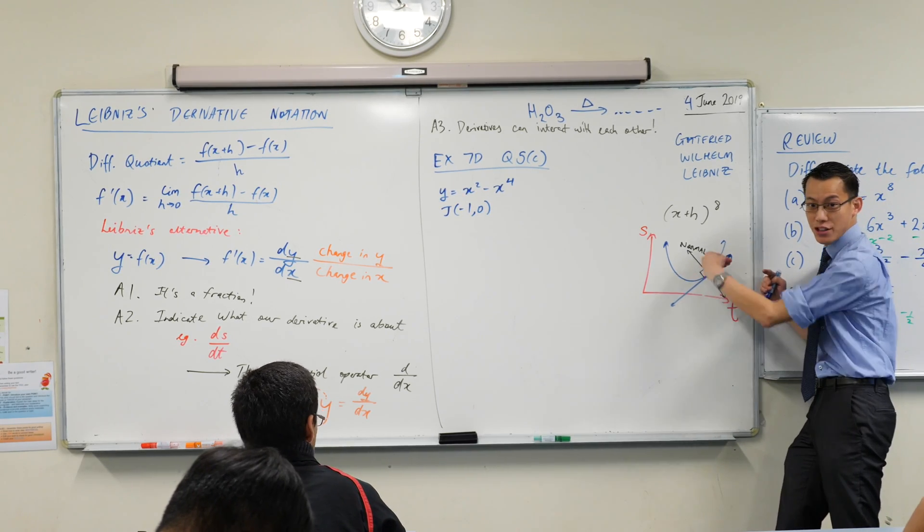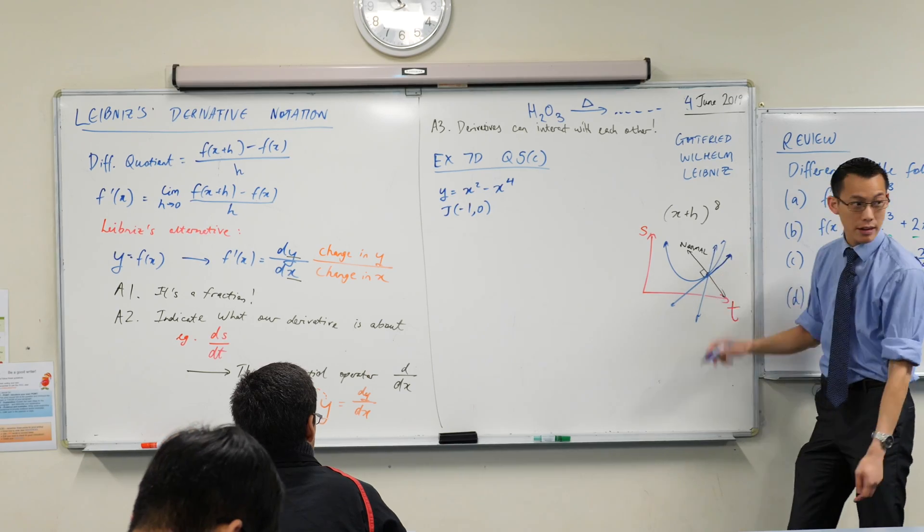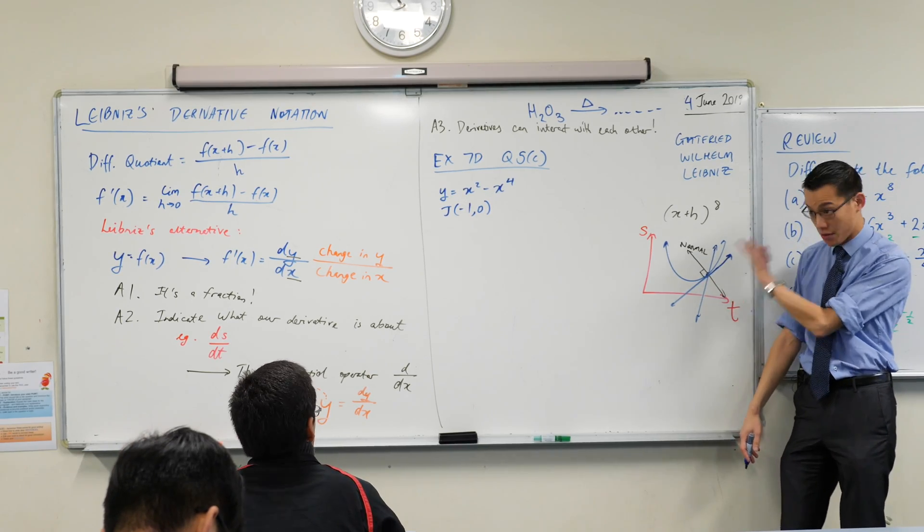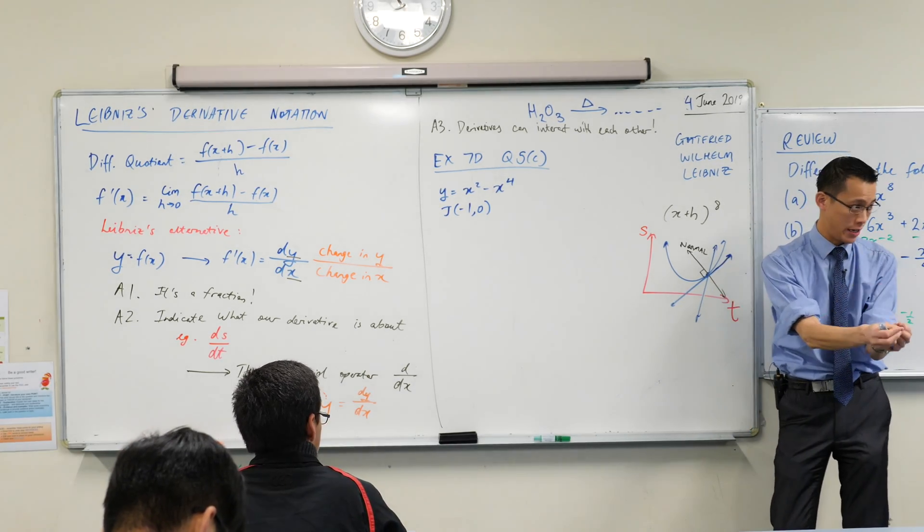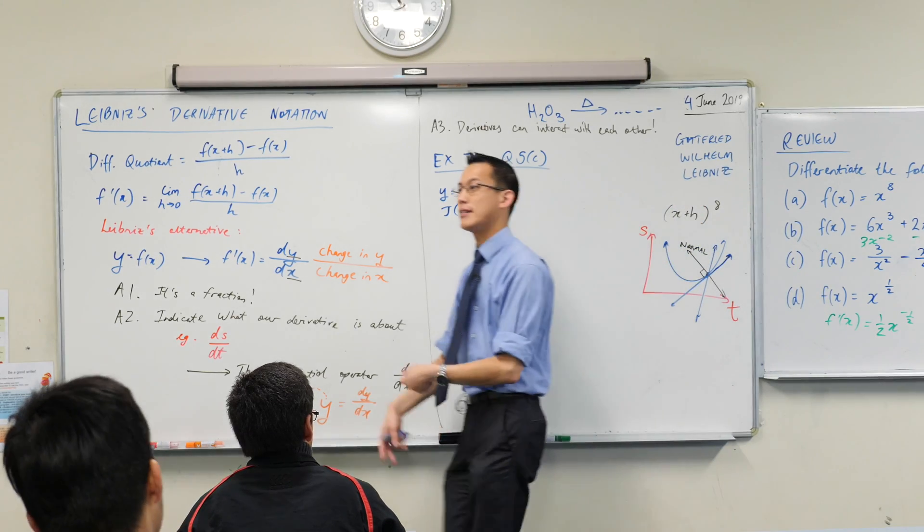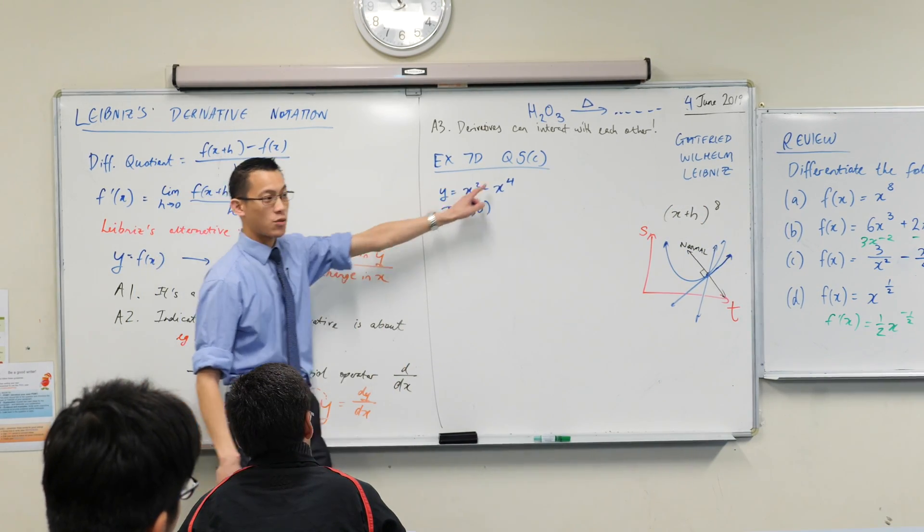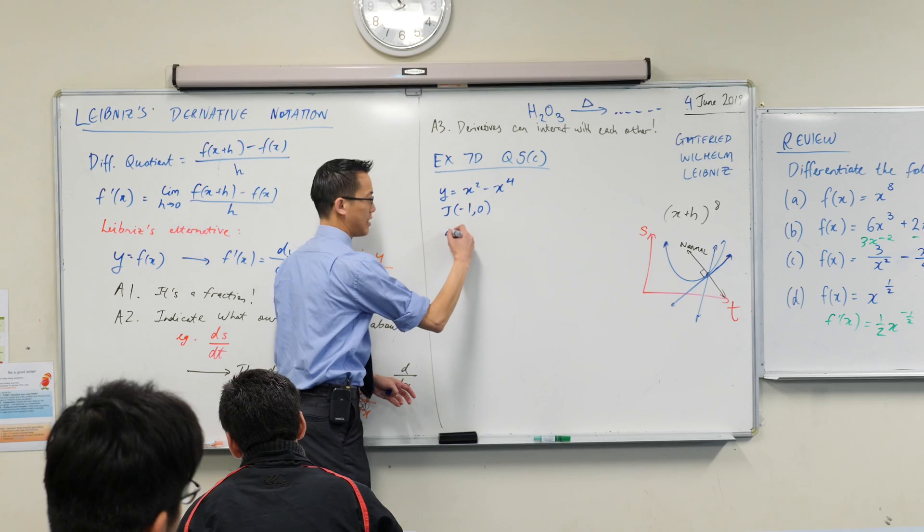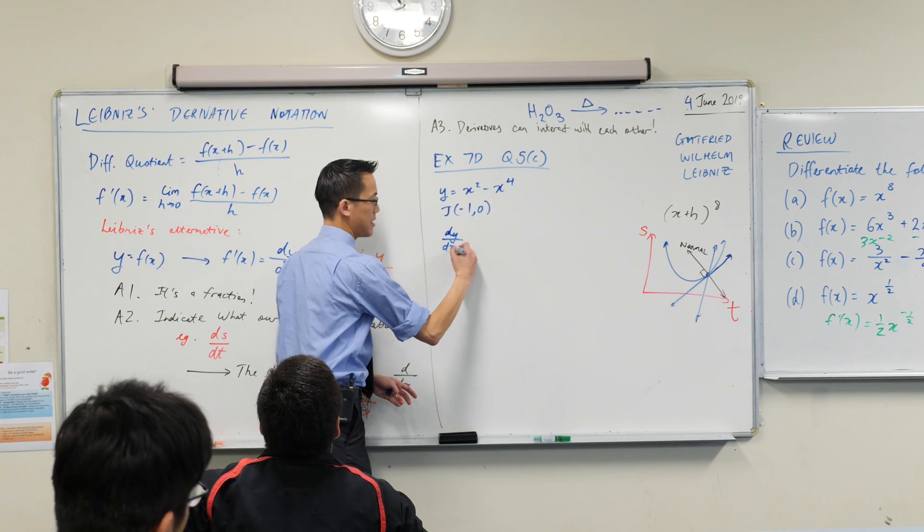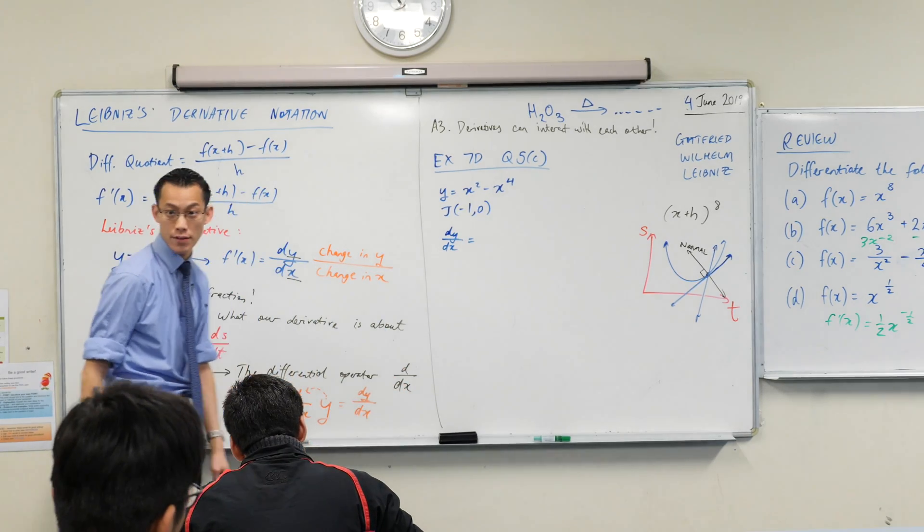Like, that's what makes this tangent the tangent. For example, this blue line I've just drawn, it also goes through that point, but it's not the tangent because it doesn't have the right gradient. So because we're interested in gradient, that's why I'm going to differentiate. I've got y equals this, so I'm going to use my dy/dx notation to indicate the derivative.